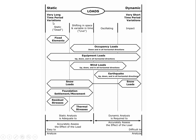On a scale from static to dynamic, fixed elements fall at the static end since they're there permanently. We also have occupancy loads or live loads and equipment loads. For example, if you have a parking level, vehicles rolling around are equipment loads and a form of live load. We distinguish between human live loads and equipment loads, which may be permanent — like HVAC equipment — or short-term, like automotive traffic on a parking level.